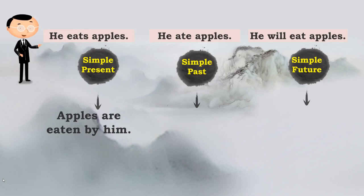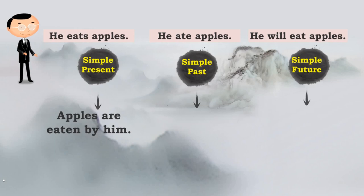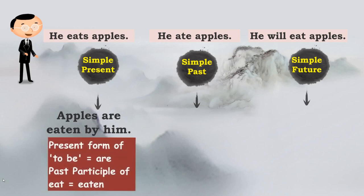Then 'are' is used — it is a 'to be' form and it is in the present form. Then there is a past participle used: 'eaten.' There is a word 'by' written. So we have followed all the rules. For the second sentence, 'He ate apples,' we have to shift the position of 'apples' and 'he,' and retain the tense of 'ate,' which is simple past — the tense is retained in the 'to be' form. Result: 'Apples were eaten by him.'